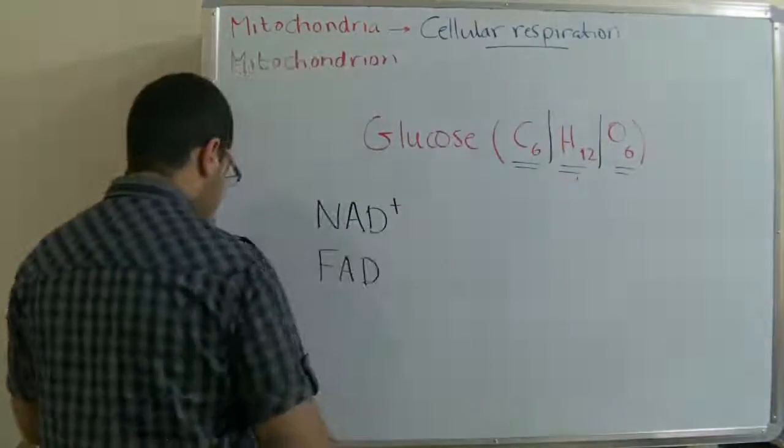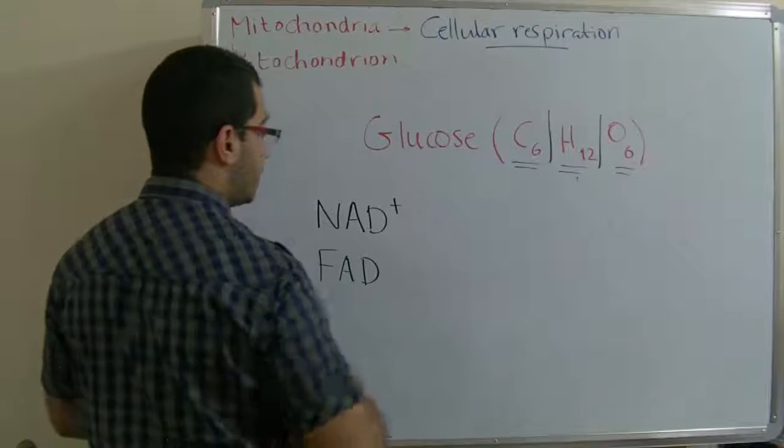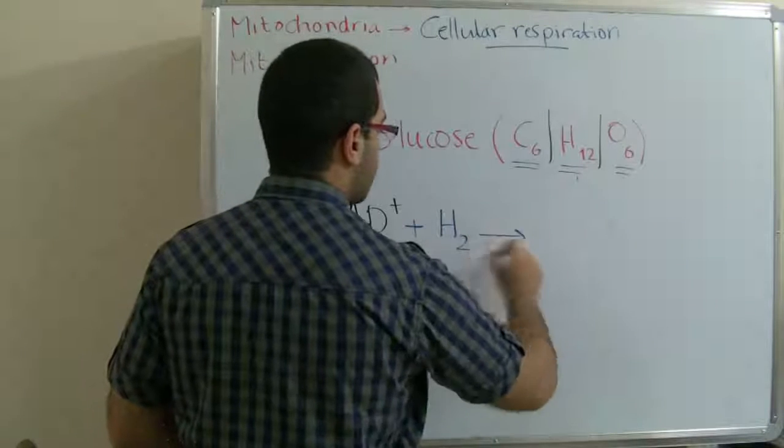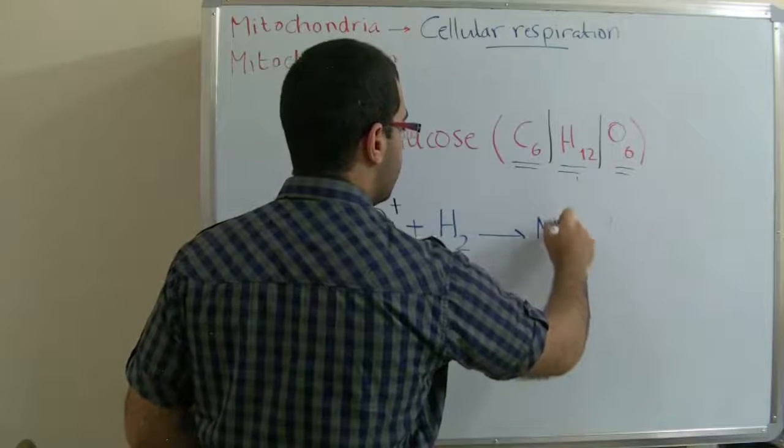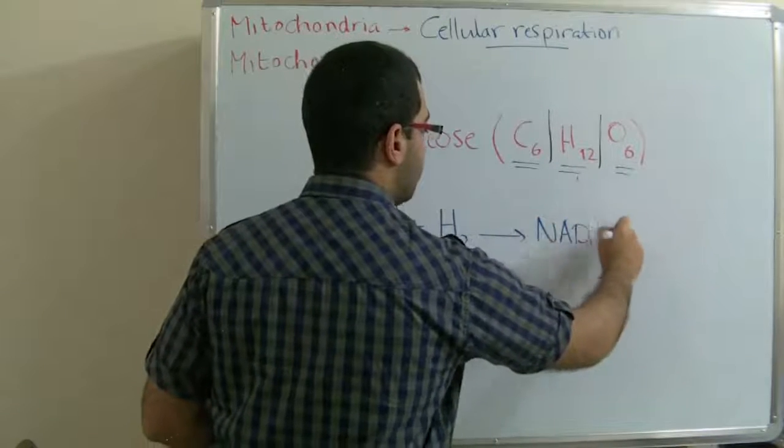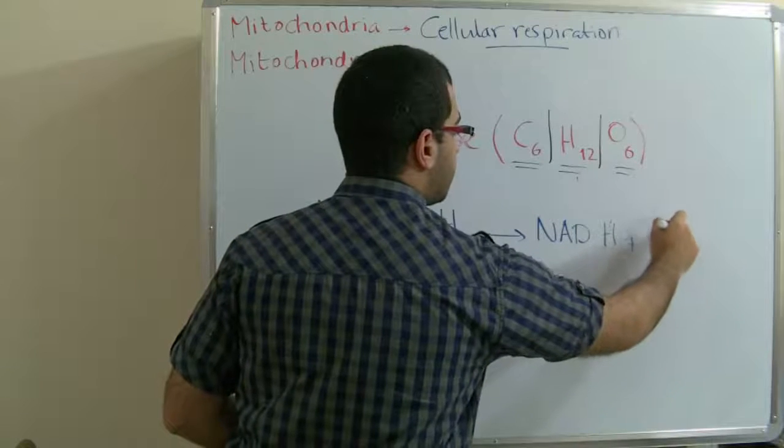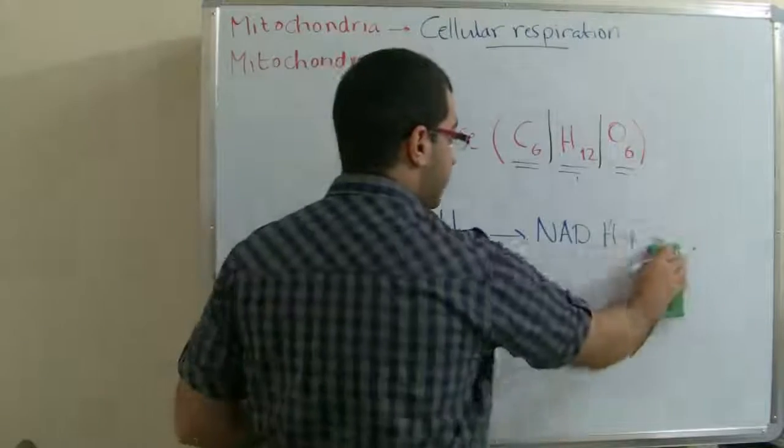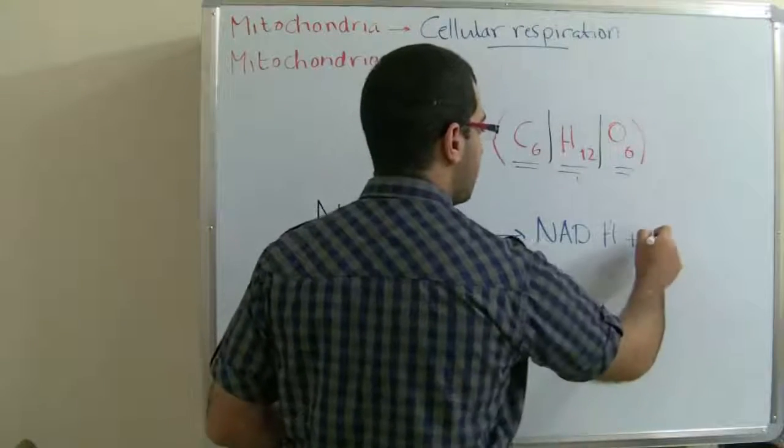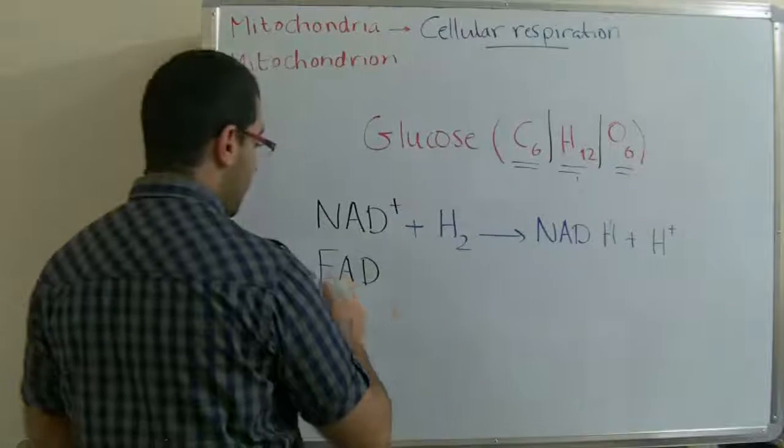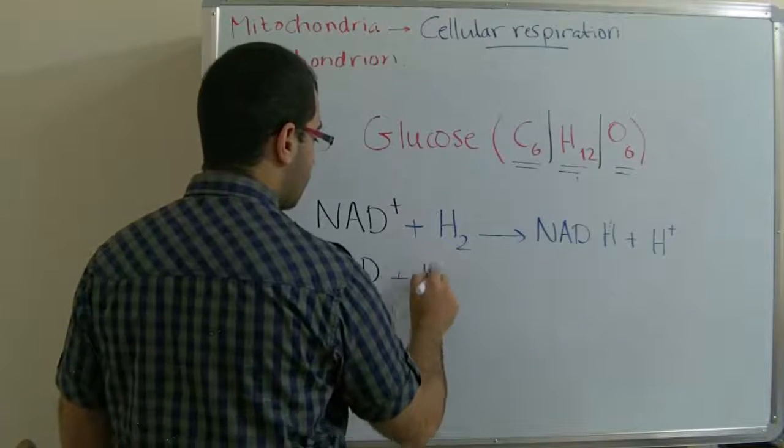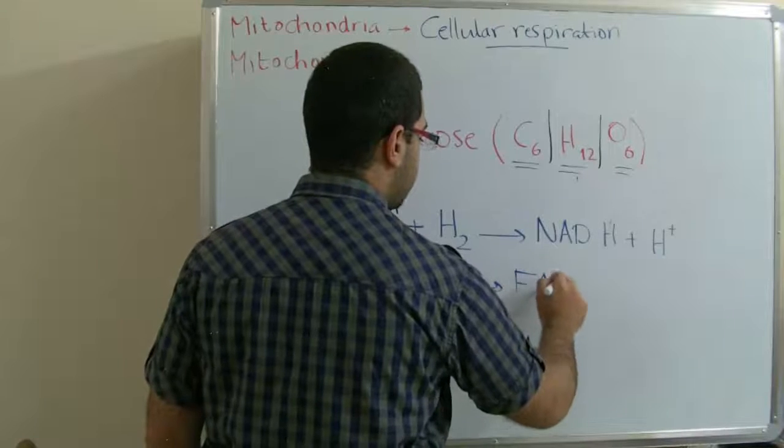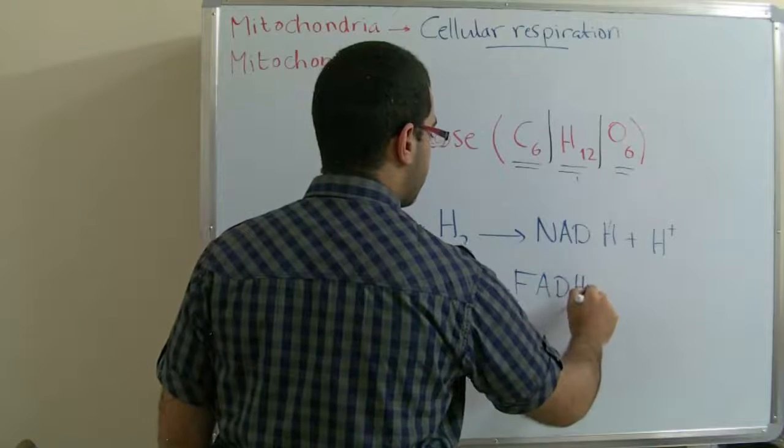When the NAD+ binds with H2, it gives NADH plus free proton, one hydrogen atom. And when the FAD binds with the hydrogen, it gives FADH2.